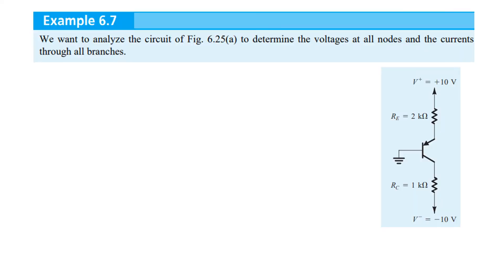So, with this knowledge, let's see example 6.7 and try to solve it in our own understanding. We have to analyze the circuit to determine the voltages at all nodes and currents through all branches. So, all voltages we have to find: VB, VC, VE and IB, IC, IE.